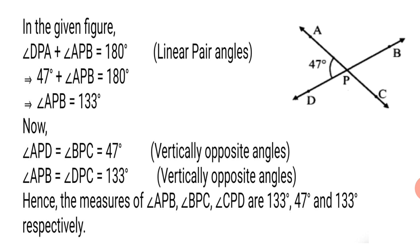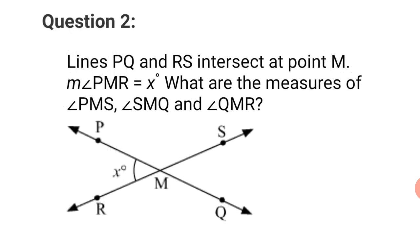This way we have completed Question 1. Let's move to Question 2. Lines PQ and RS intersect at point M. Measure of angle PMR equals x degrees, as shown in the figure. The question asks: what are the measures of angle PMS, angle SMQ, and angle QMR? We have to find the remaining three angles, but here the measure is given as an alphabet rather than a number.